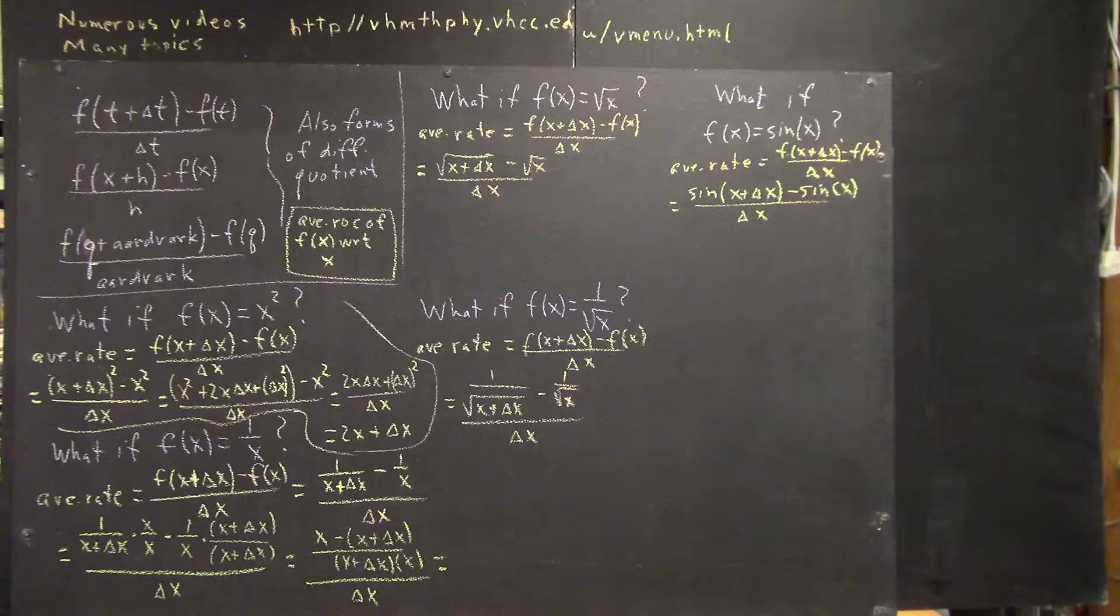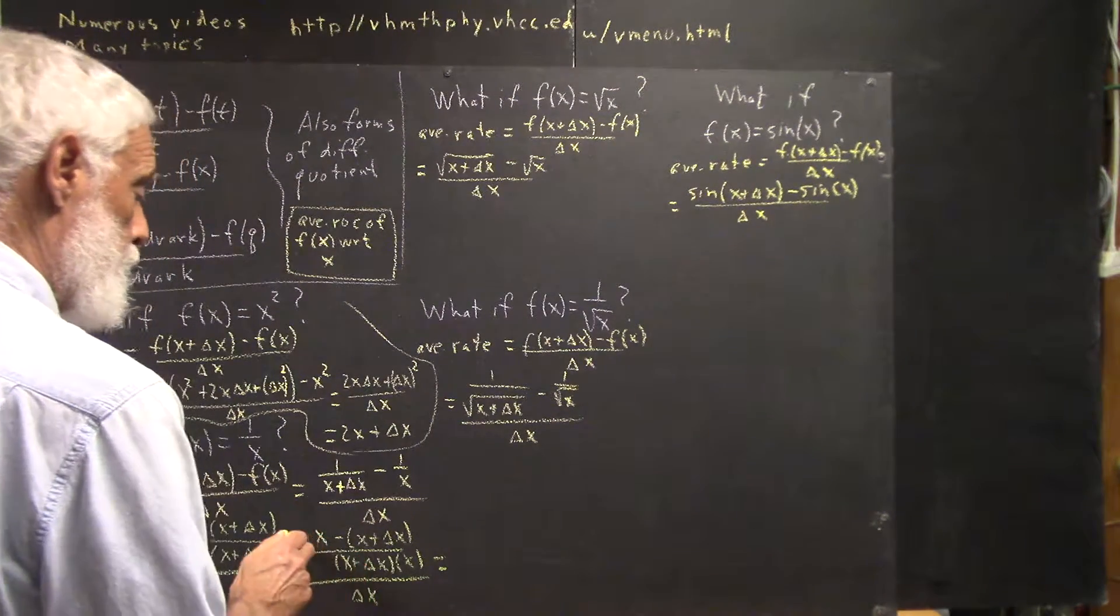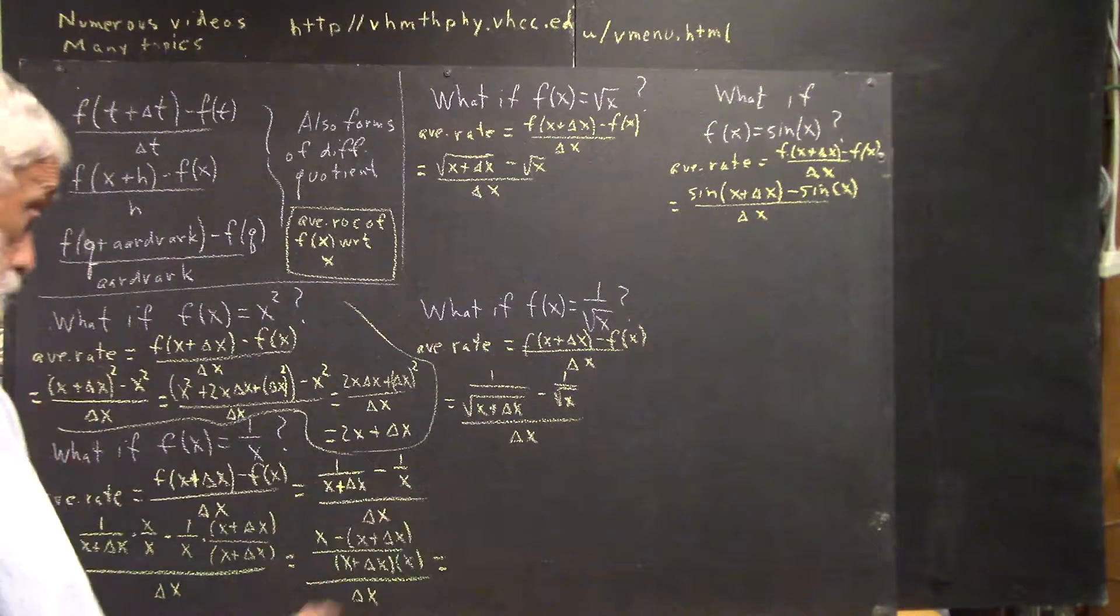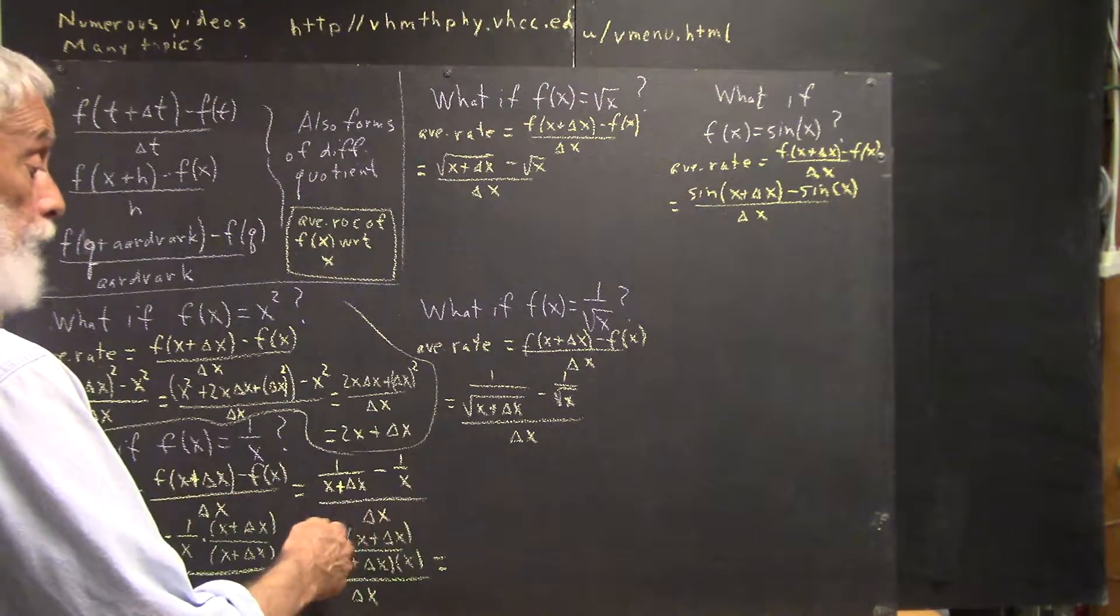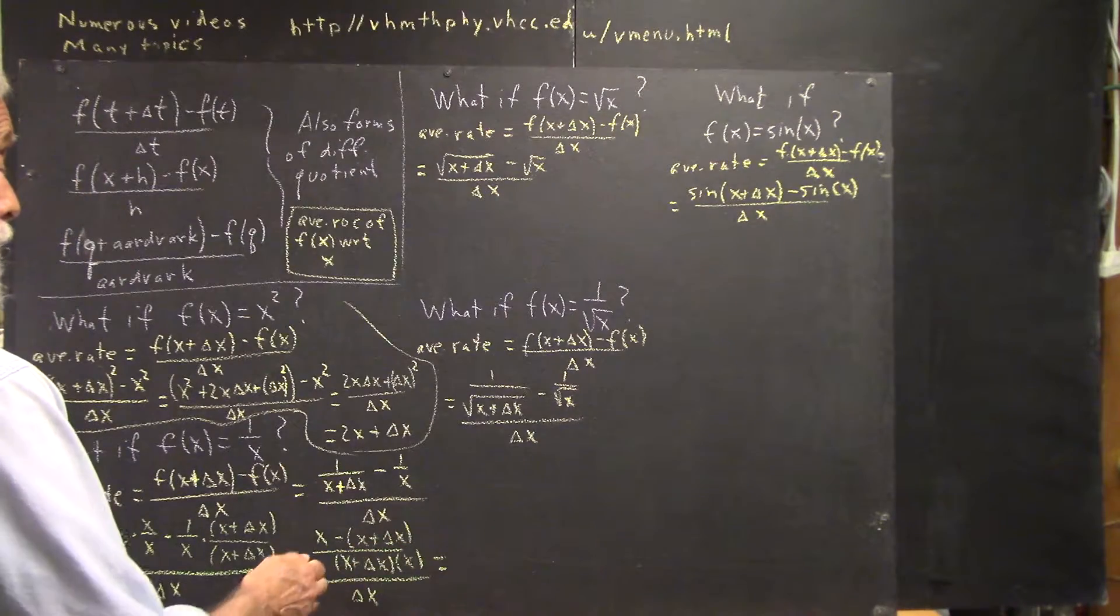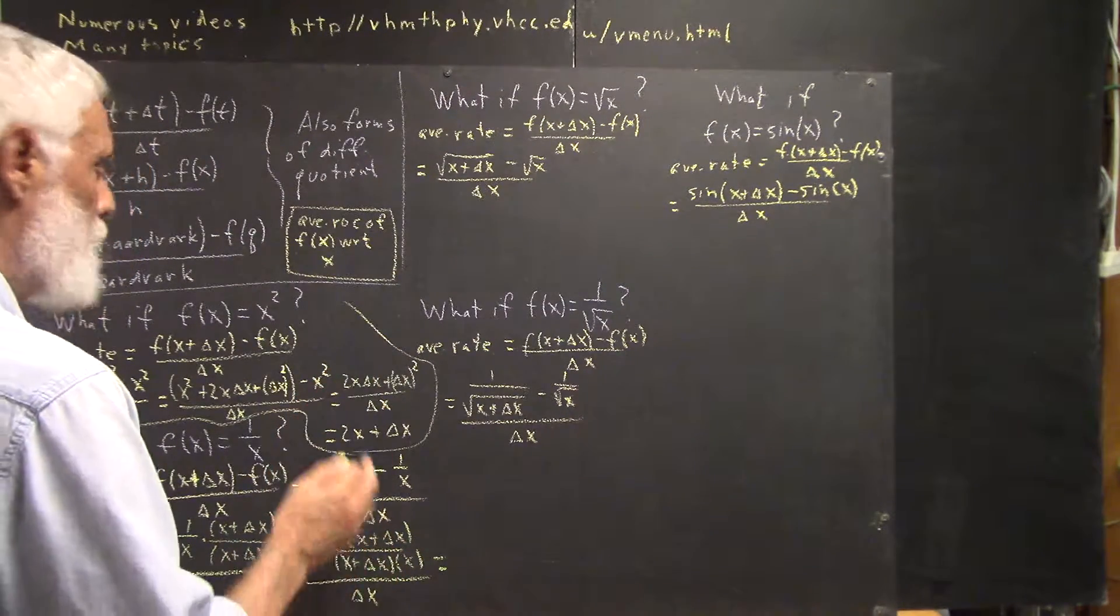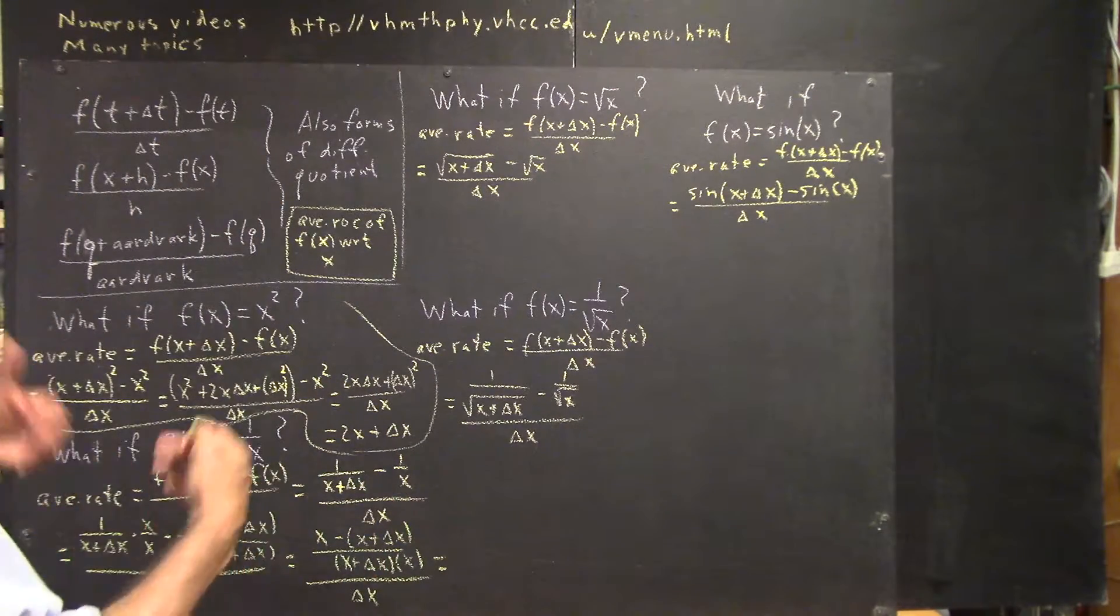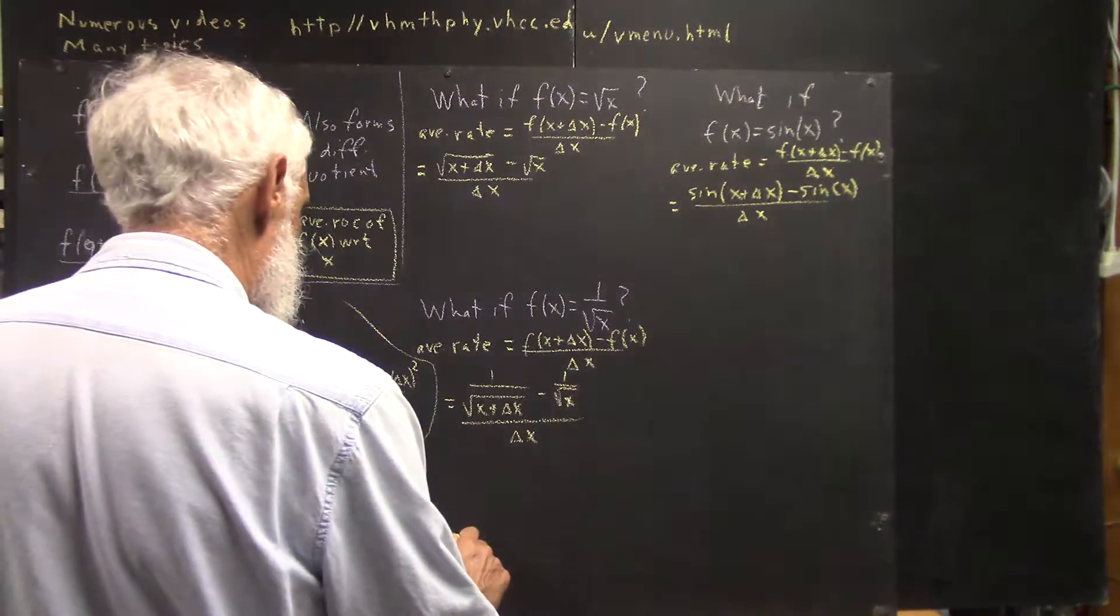Now what's that give me? OK, the numerator up here, you've got an x here, you've got a minus x here, so that's going to go away. You expand this: x minus the quantity x plus delta x is x minus delta x minus x minus delta x. x minus x is zero, that just leaves you with minus delta x.